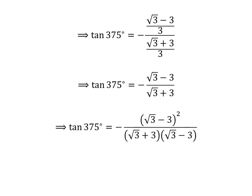Let us rationalize the fraction. Since multiplying the numerator and denominator by a common factor does not change the value, we multiply both by square root of 3 minus 3. So we get tangent of 375 degrees is equal to minus the square of square root of 3 minus 3, upon square root of 3 plus 3 times square root of 3 minus 3.